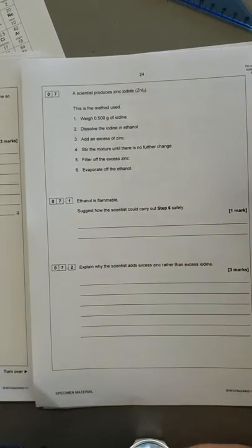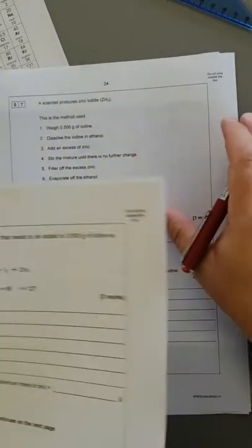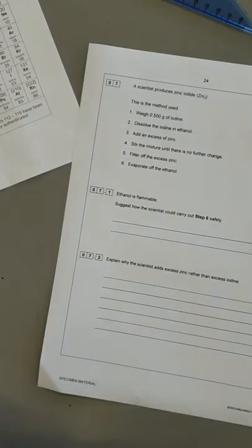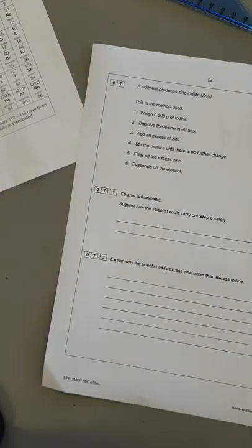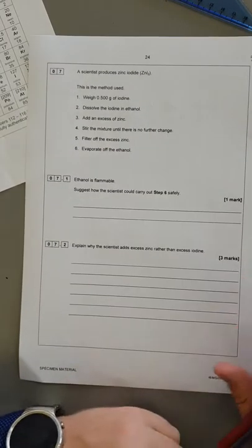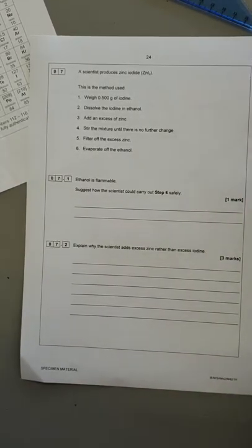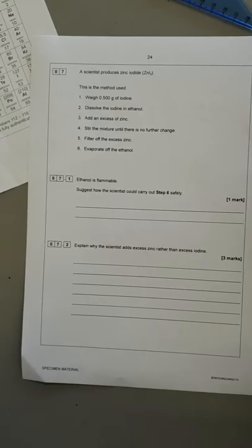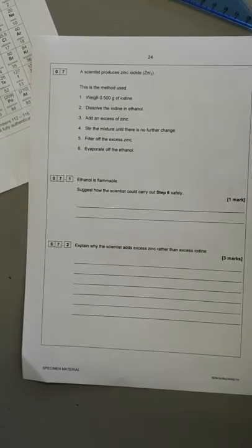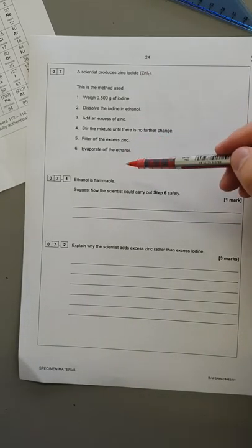Alright, question seven. We are well on our way with this mock now. So we've got a method to produce zinc iodide. This is based on a required practical that you would have done, just some slightly different ingredients. So here is our method.